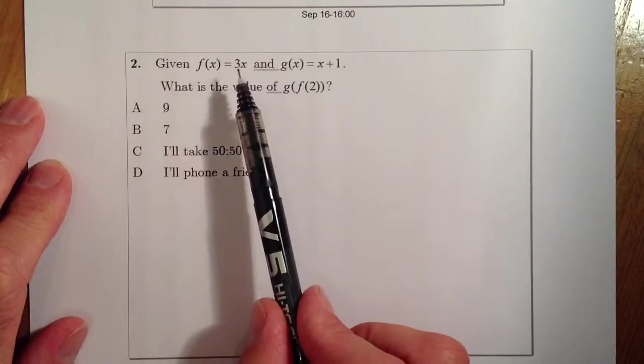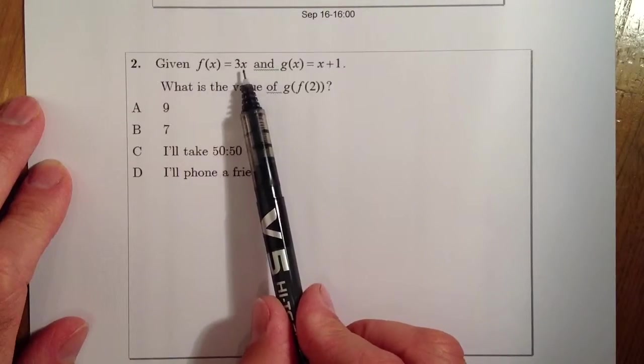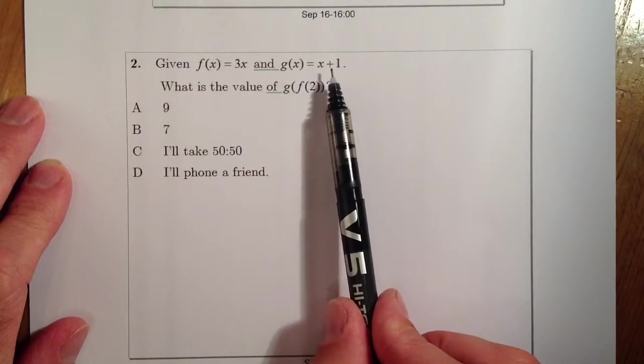Right, so we're given two functions, we've got an f of x function which is 3x and a g of x function which is x plus 1.